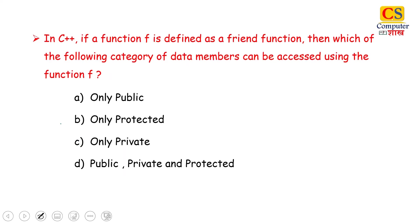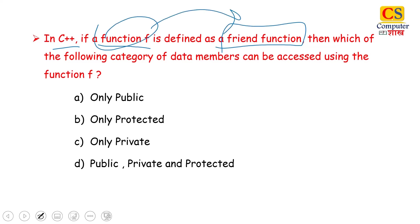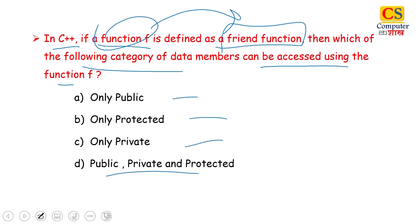Next question: In C++, if a function F is defined as a friend function, which category of data members can be accessed using function F? Options are: public, private, protected, or all of the above. This question we covered before. The right answer will be option D — we can access all three using a friend function.